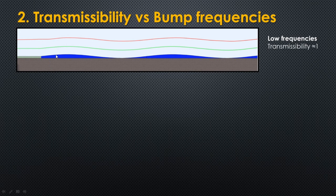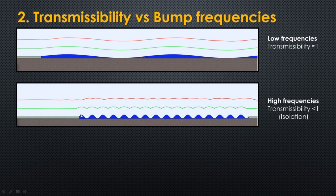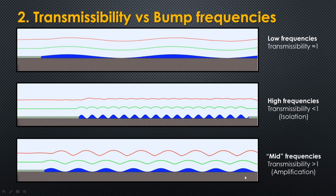So to summarize: on very low frequency bumps, the transmissibility is almost 1 — the suspension does not absorb anything. On very fast, high frequency bumps like roots or rocks, the suspension tracks and isolates them nicely — transmissibility is almost zero, it's a straight line. And very interestingly, at these mid-frequencies something strange happens: the suspension actually amplifies the bump size.